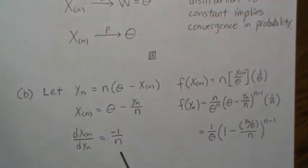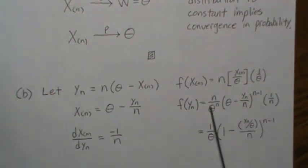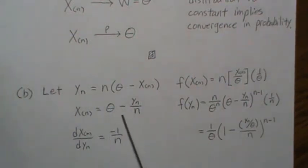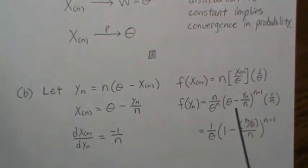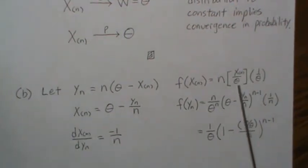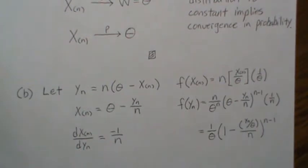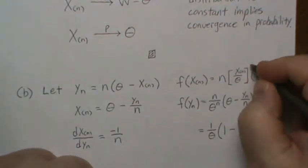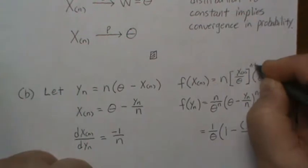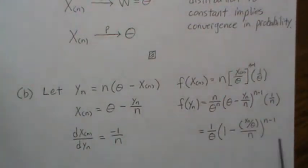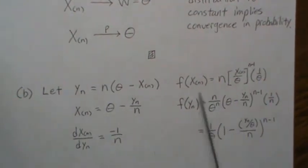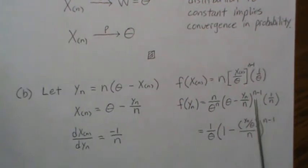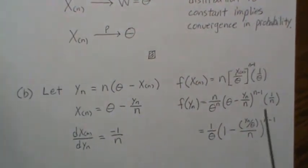So then the density of y_n is you plug in this quantity wherever there's an x_n, which is what this is. So this should be to the n minus one. So you can factor the n's out front, and that's what this is. So we just plug in this quantity for here, and it's raised to the n minus one.